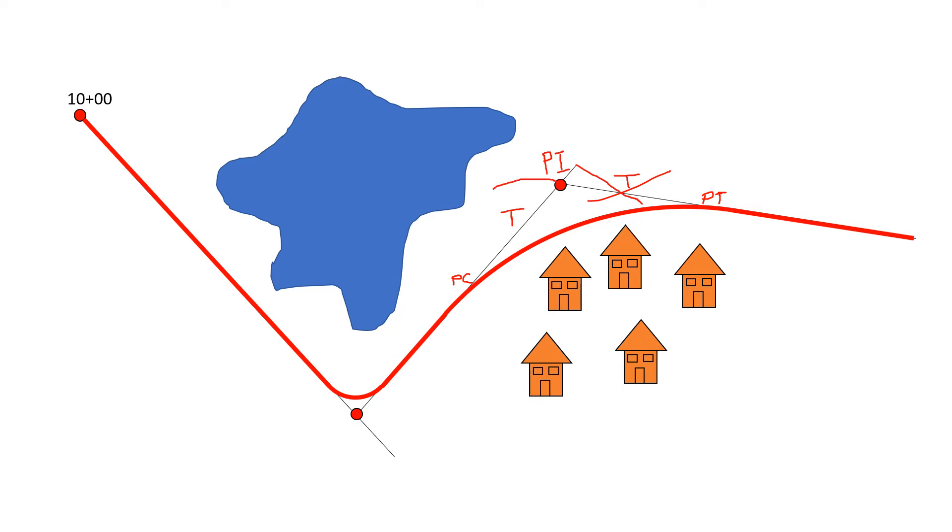If we're given the PI station, we're going to subtract the tangent length T from that PI station. That'll give us the station of the PC, and then we're going to move along the length of the curve to find the PT. So we're subtracting the tangent length and we're adding the length of the curve to find the station of the PT.